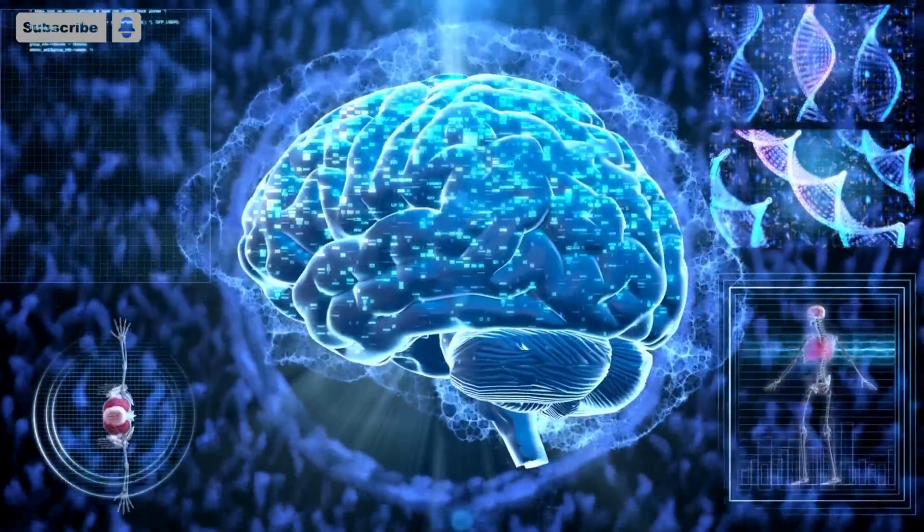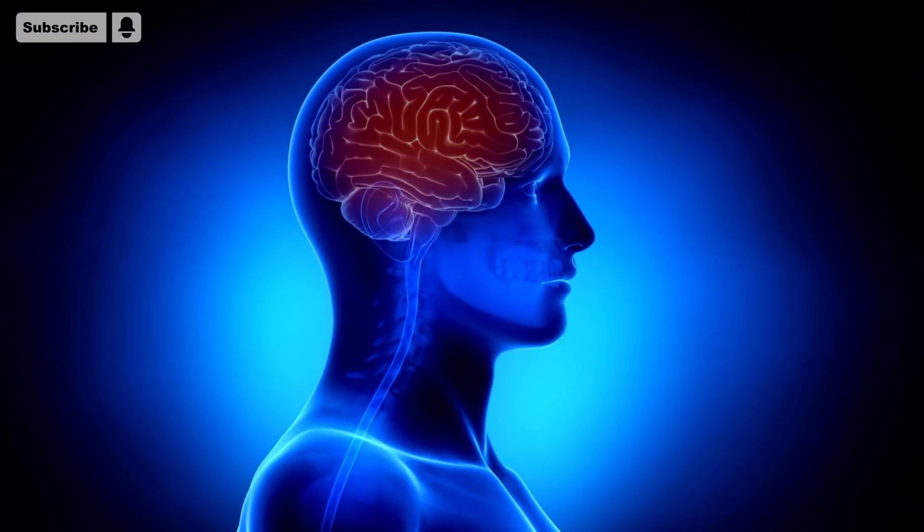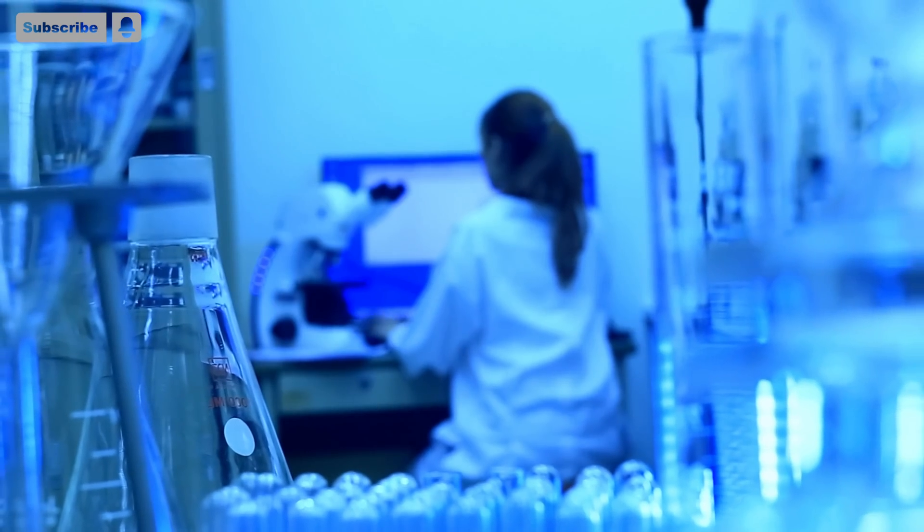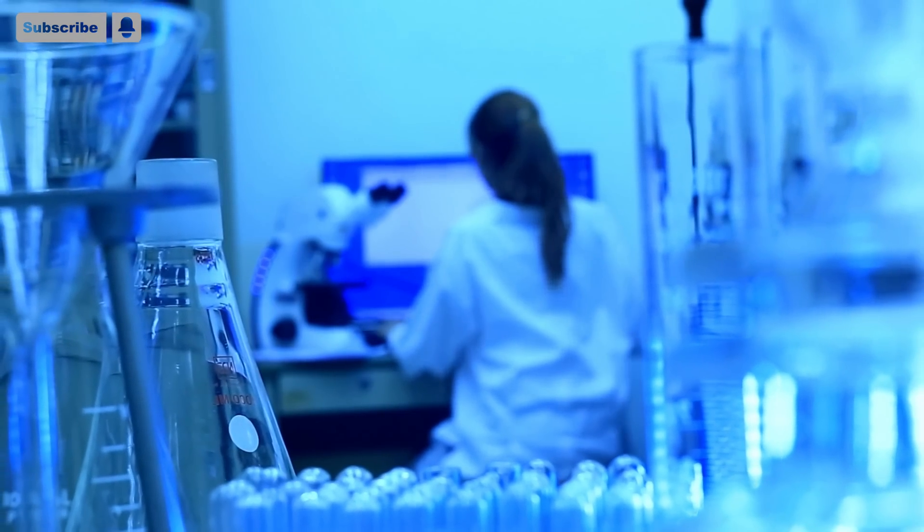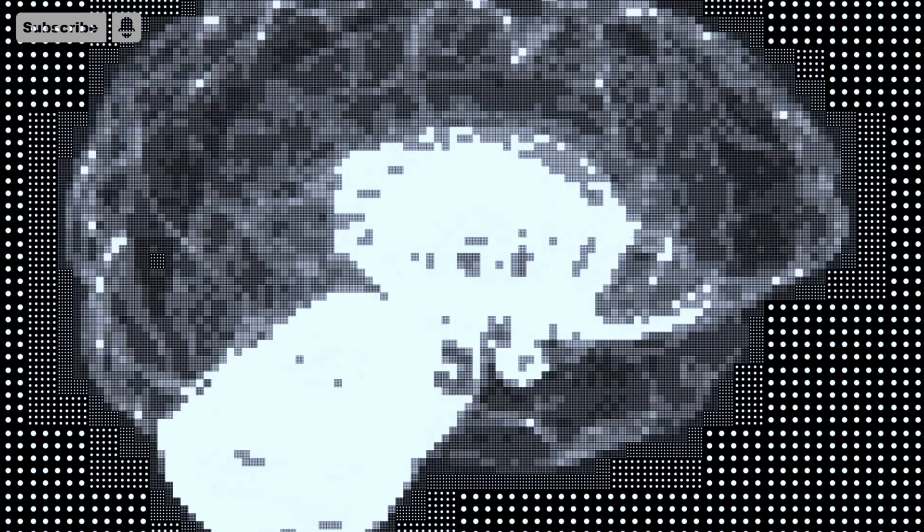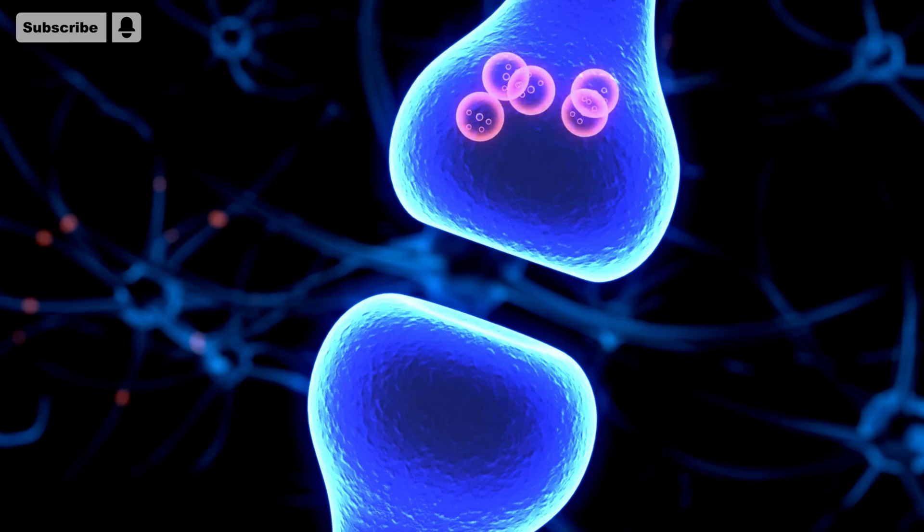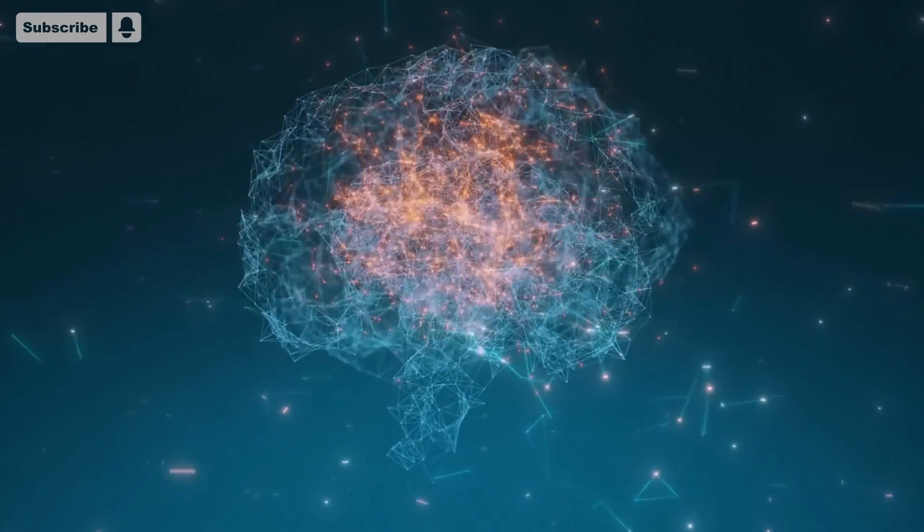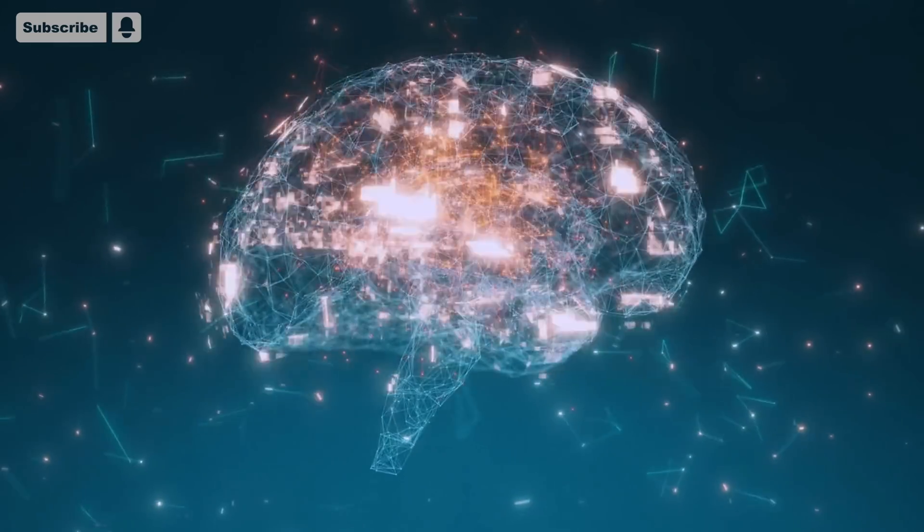Researchers develop a material that mimics how the human brain stores information. Universitat Autonoma de Barcelona researchers have developed a magnetic material capable of imitating the way the brain stores information. The material makes it possible to emulate the synapses of neurons and, for the first time, mimics the learning that occurs during deep sleep.